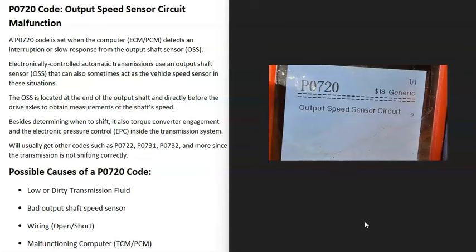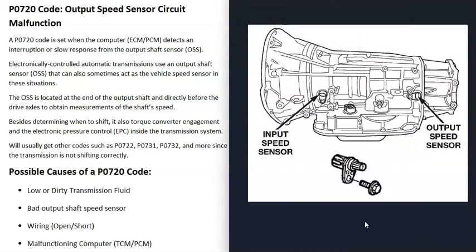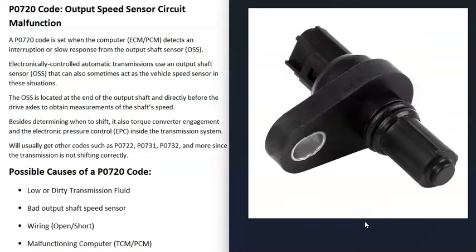What does this mean? Basically, many transmissions have an output speed sensor that reports back to the computer how fast the output shaft is spinning. This allows the computer to know when to shift. When you get a P0720 code, the computer's seeing a problem with this sensor and it needs to be troubleshot.